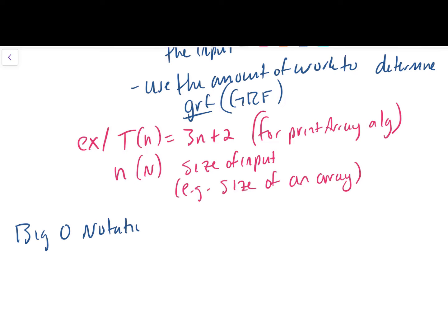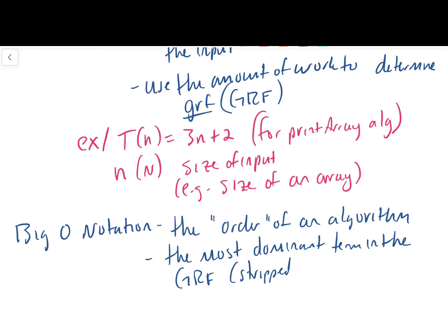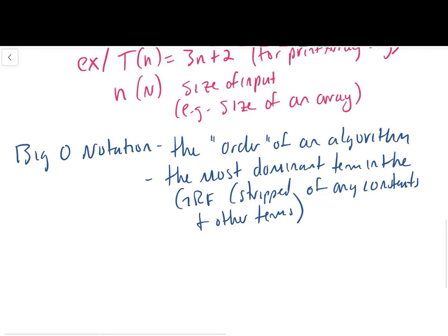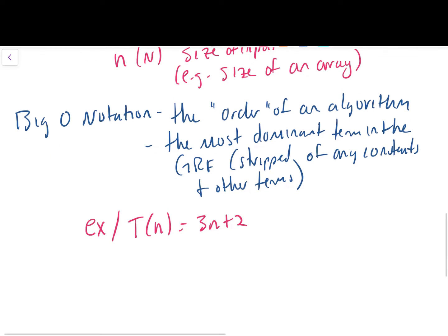And thanks to our nice little demo we did at the beginning of the video, we already have a sense of what a growth rate function looks like and how we can derive one. So let's return to that example here. Let's say our growth rate function T of n is 3n plus 2. So in this case, n is our independent variable, but also sometimes written as capital N, is the size of the input.